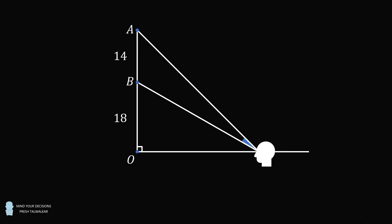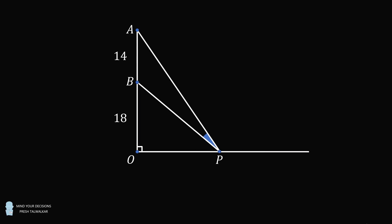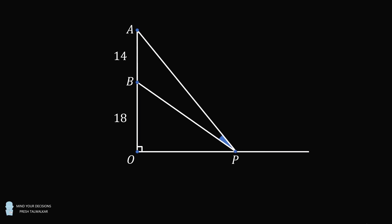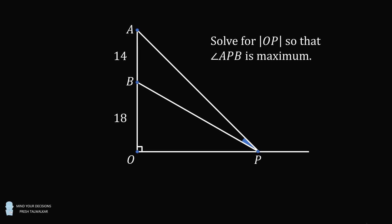Suppose your eyesight is at point P. As you move closer or farther away, you will change the viewing angle APB. So if you move very close or go very far away, it might change. So the question is, what distance should you be viewing the painting at? That is, what is the length OP such that the angle APB is maximum?